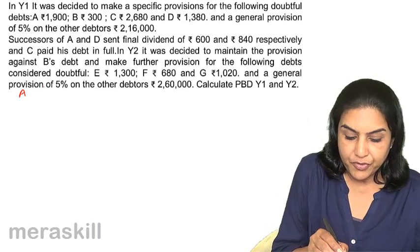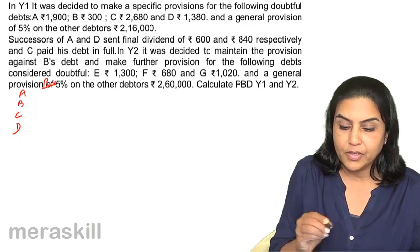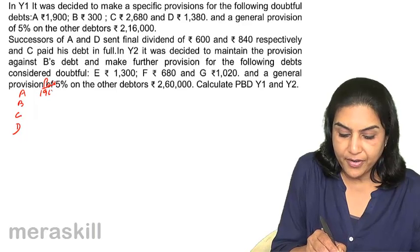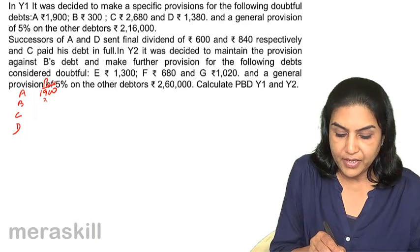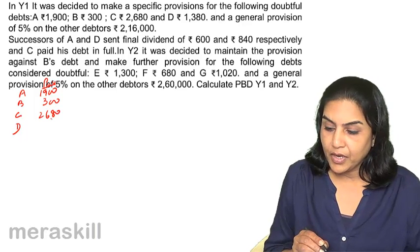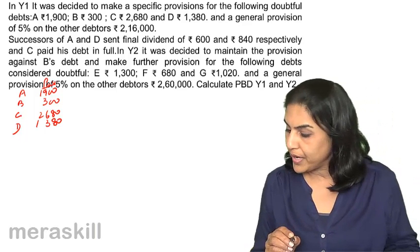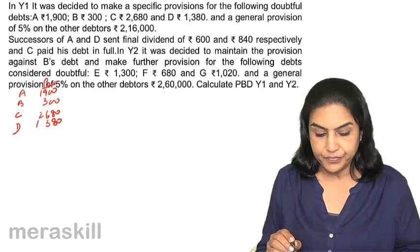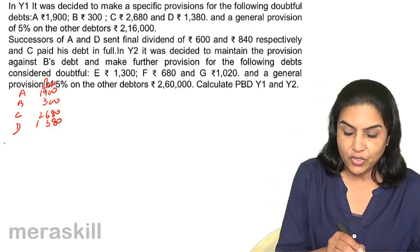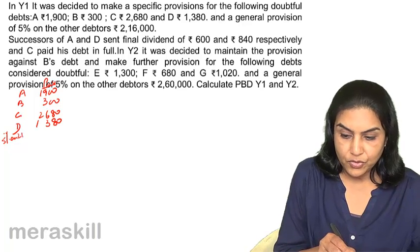They have made a provision for A, B, C, and D. The provision is: A - 1,900; B - 300; C - 2,680; D - 1,380; and a general provision of 5% on 2,16,000.